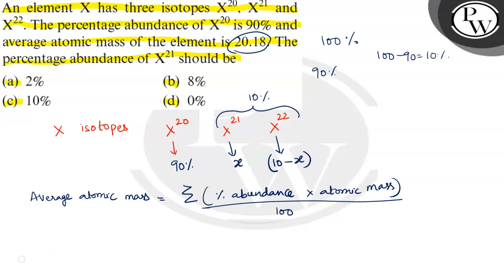So we need to just substitute that value. The value given is 20.18 is equal to percentage into atomic weight.